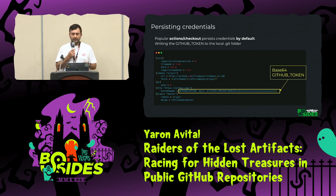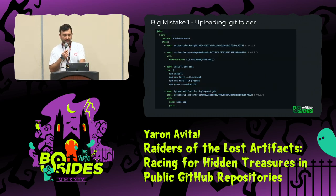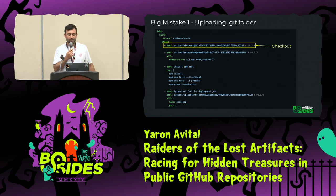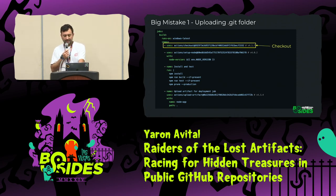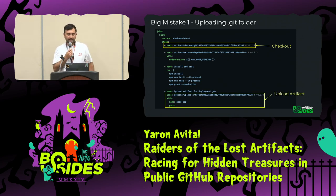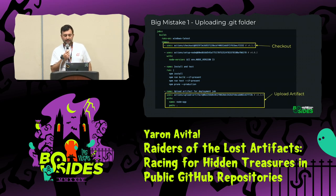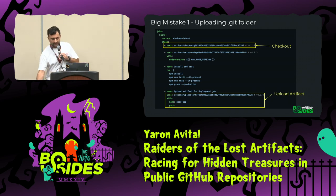On its own, that's not a problem. But combined with the fact that a lot of users simply check out their code and upload the entire directory — including the hidden .git folder — that's a problem, because your token is leaked.